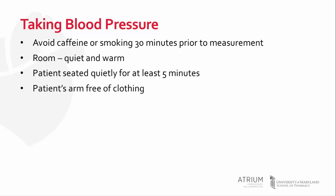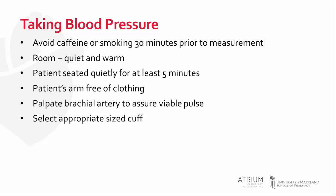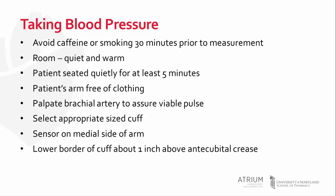Make sure that the arm is free of clothing, as putting the cuff over clothing can elevate the pressure. Palpate the brachial artery to ensure a viable pulse. Then, select the appropriate size cuff — the width should be about 40% of the upper arm and the length should be about 80% of the upper arm. Make sure the sensor is on the medial side of the arm for an appropriate reading. The lower border of the cuff should be about one inch above the antecubital crease to make sure you're not missing the reading.